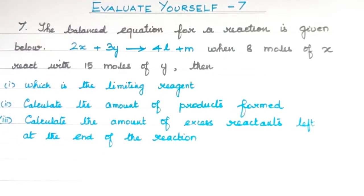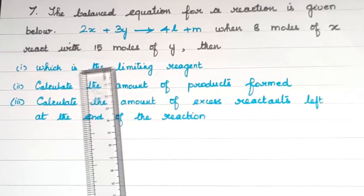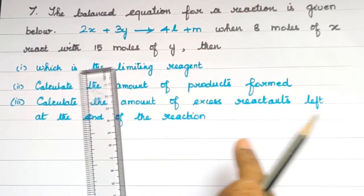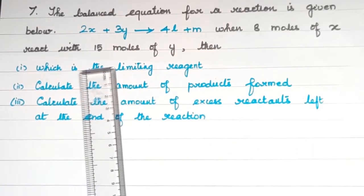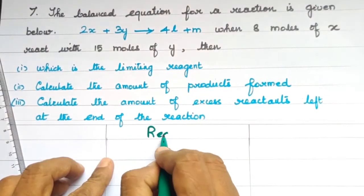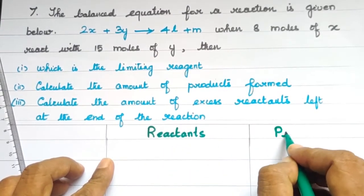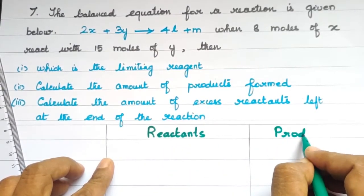In the steps for limiting reagent related questions, we will answer using a tabular column. In the tabular column, we will assign the reactants and products to the end of the reaction. I will add reactants and add products.